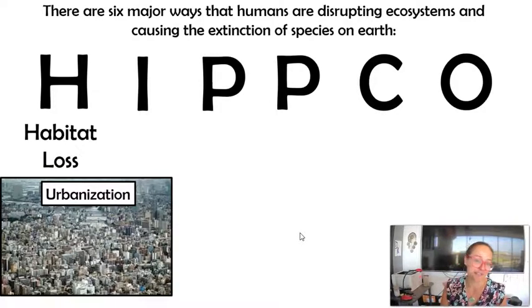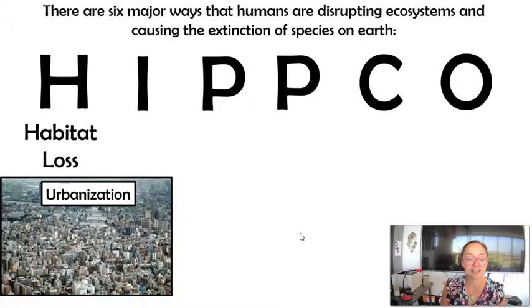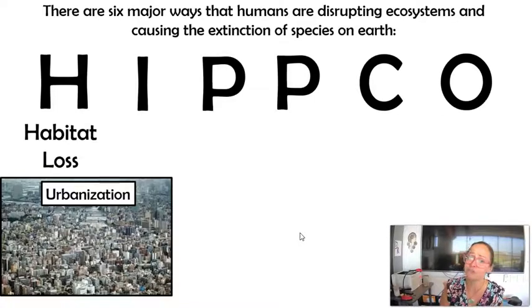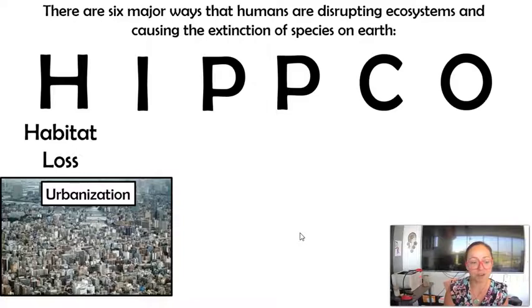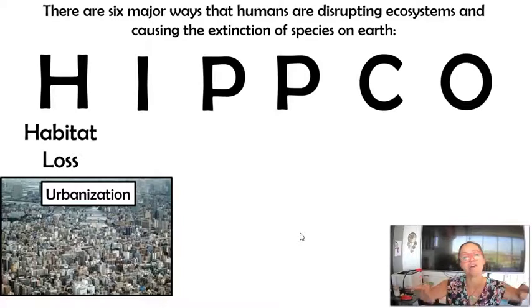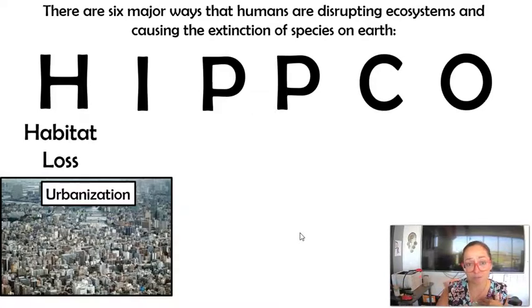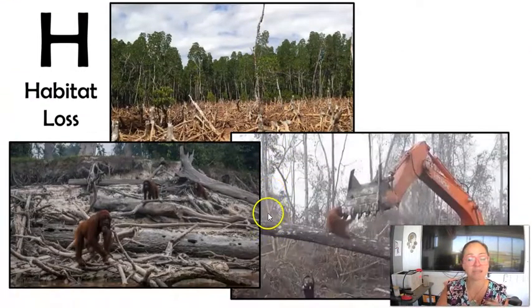Urbanization is when a human population grows and we move into cities. Based on this picture alone, you can imagine the millions of people that live in a region and how much food, clothing, and building materials would be required to support them. Think about all the structures, furniture, and resources that go into supporting a population of 8 billion humans — we're going to have to spread out into natural ecosystems to get enough resources.